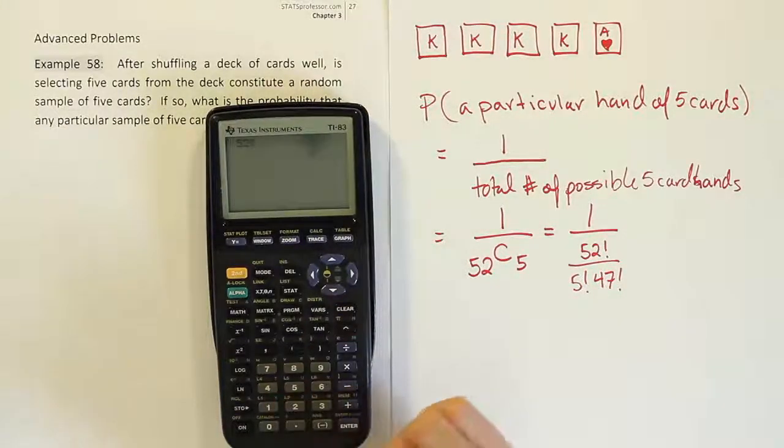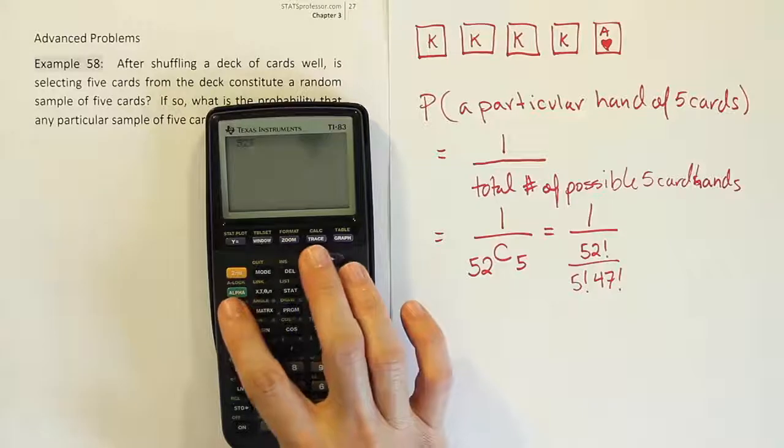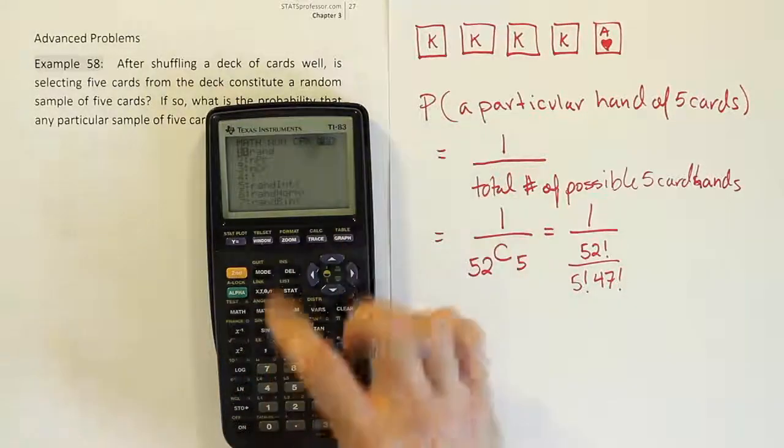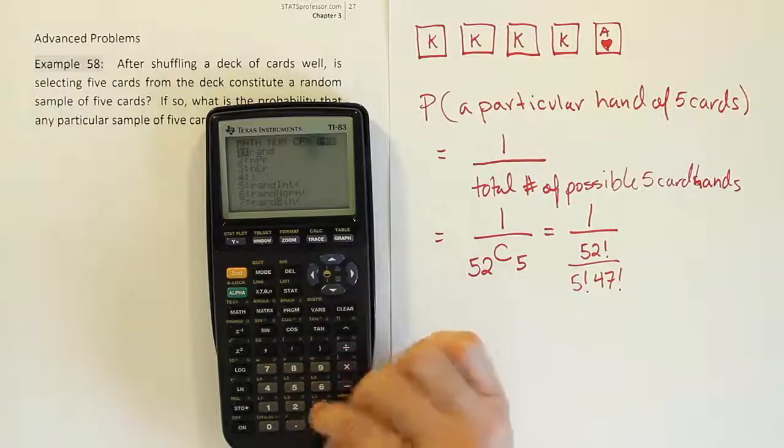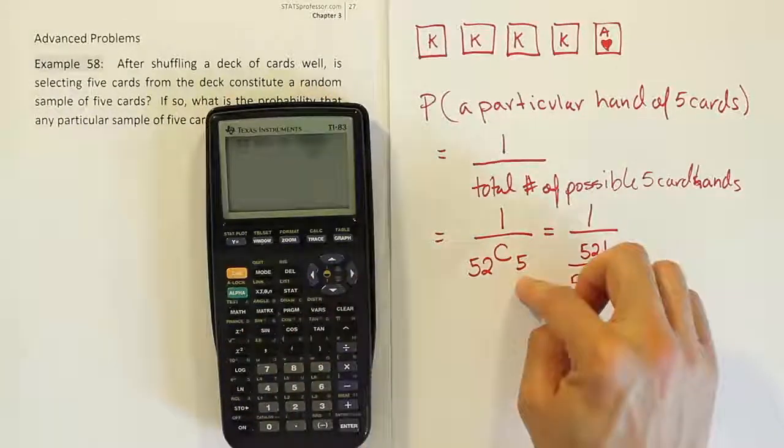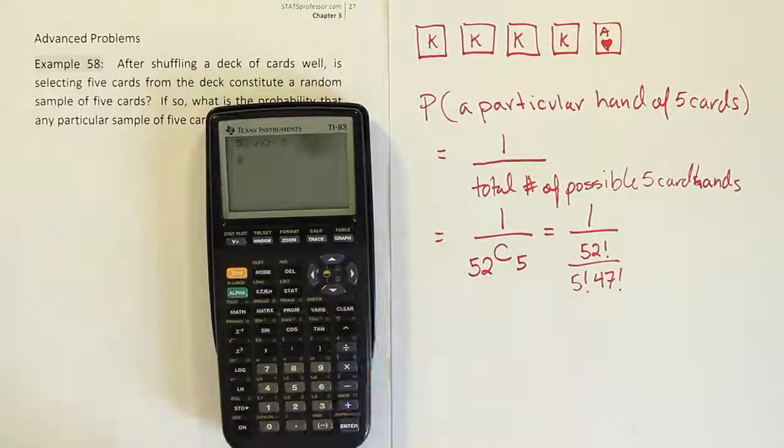In my calculator, the way this is done is I press the math symbol and I arrow to the left to where the PRB menu comes up. And I'll take option three, which you can see is NCR. So 52, NCR, and then I'm going to take the number five. If I do that, I get the answer.